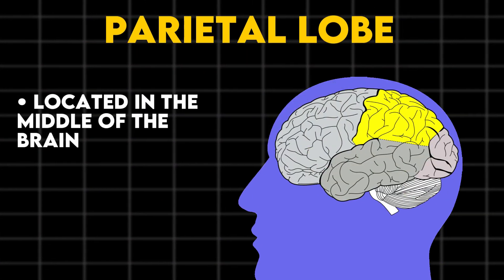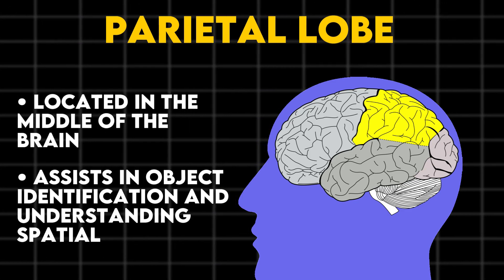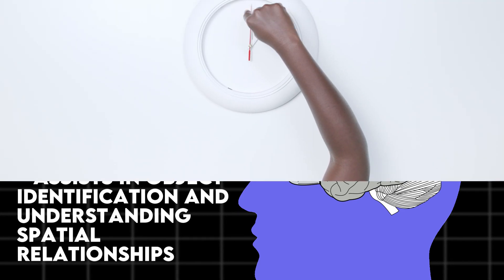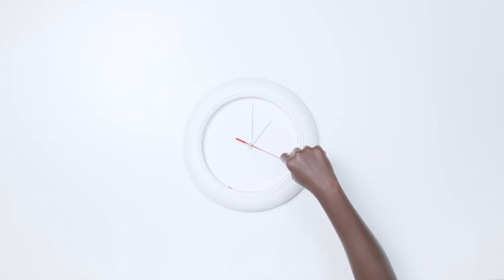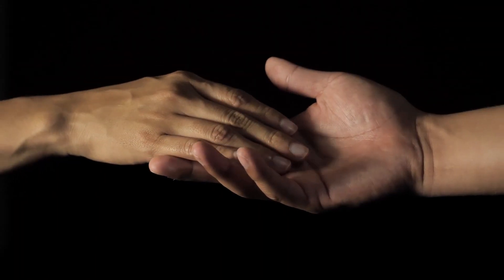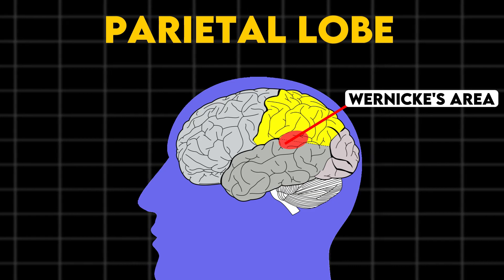The parietal lobe, located in the middle of the brain, assists in object identification and the comprehension of spatial relationships, which is the understanding of how objects and people move in relation to each other. The interpretation of touch and pain experienced by the body also involves the parietal lobe. The region called Wernicke's area is located here, which assists the brain in comprehending spoken language.